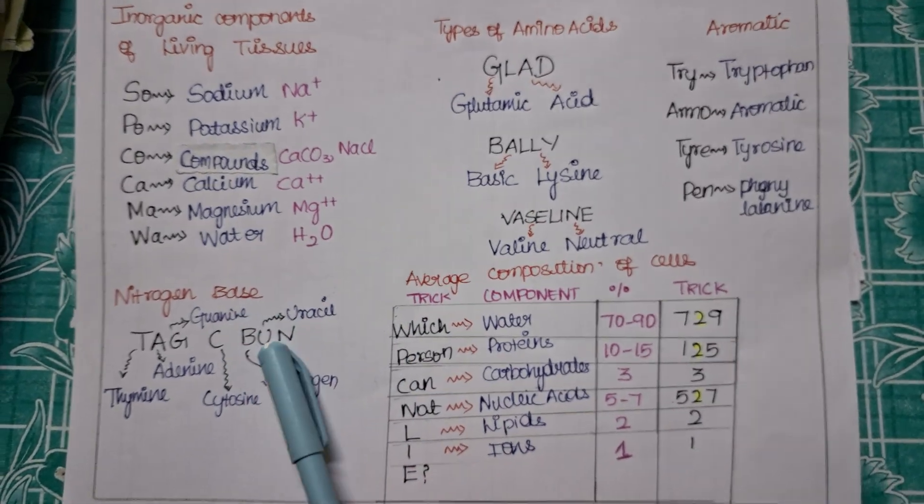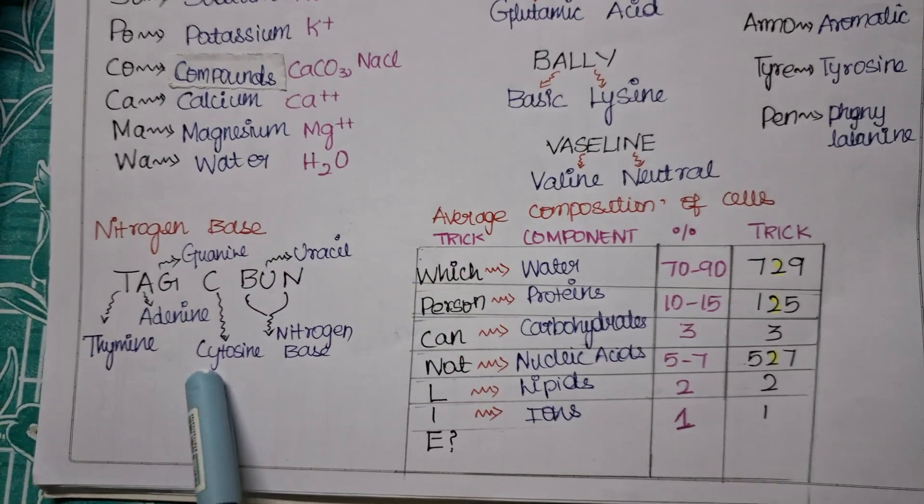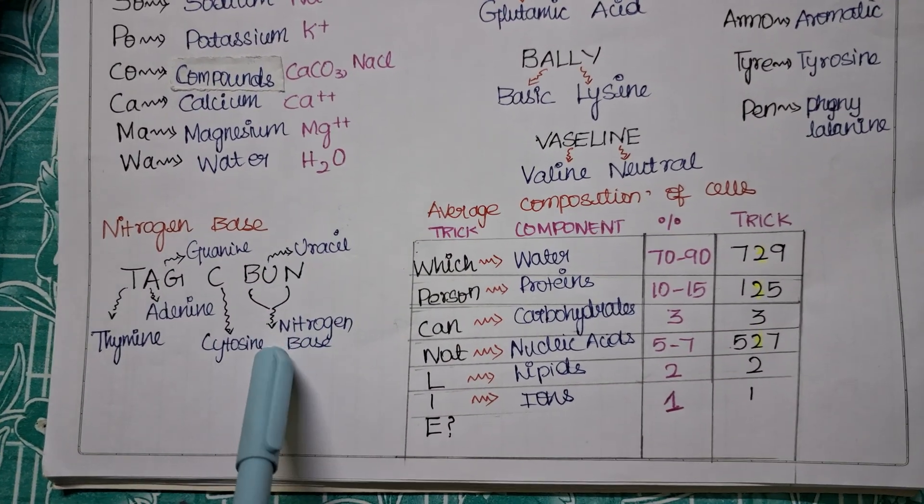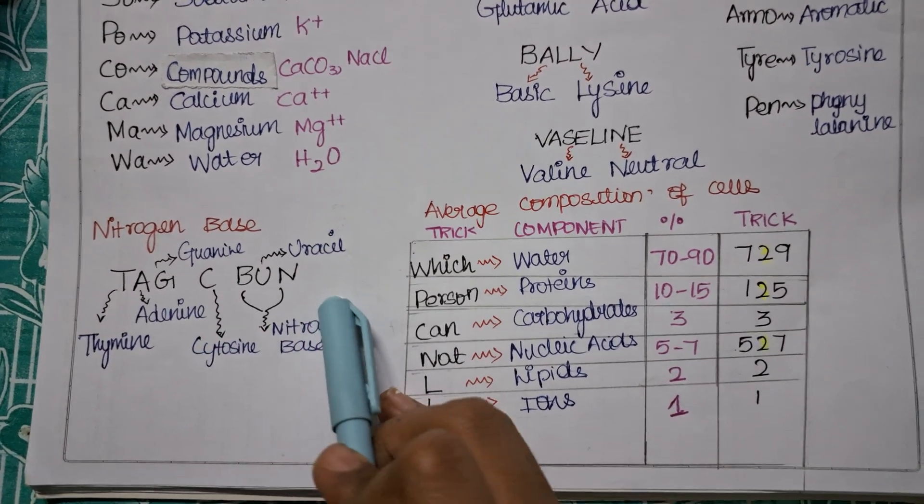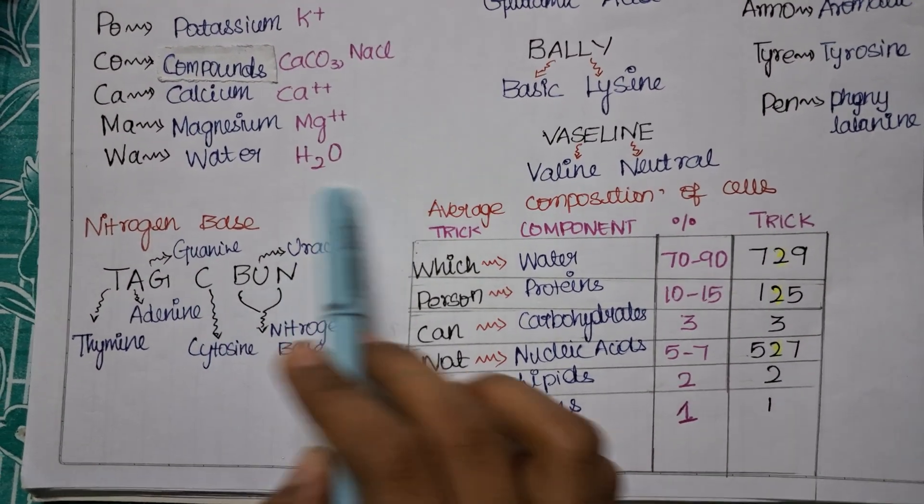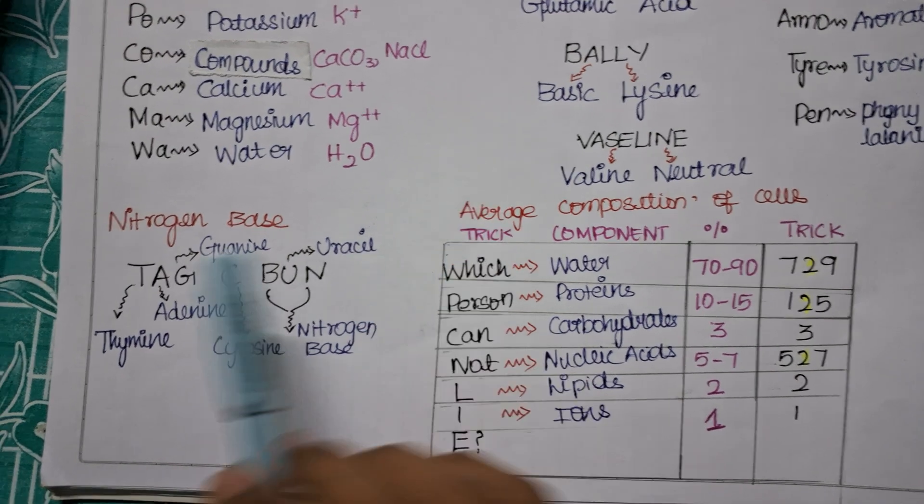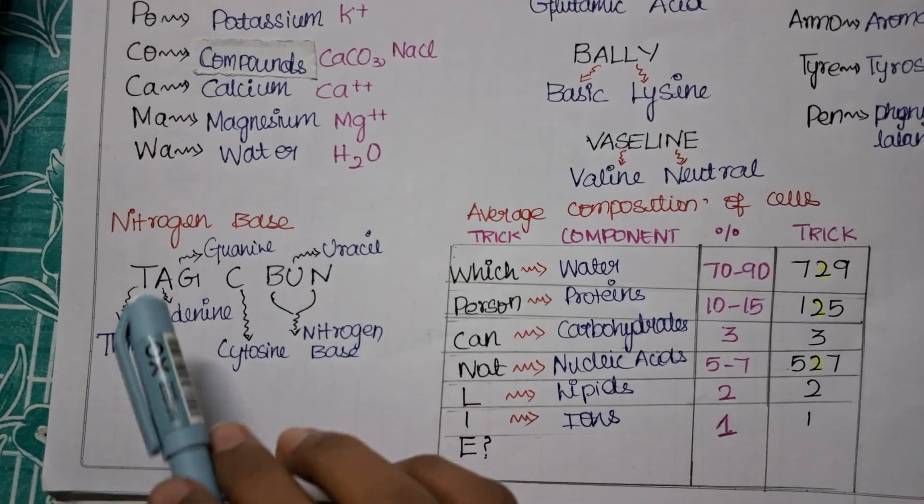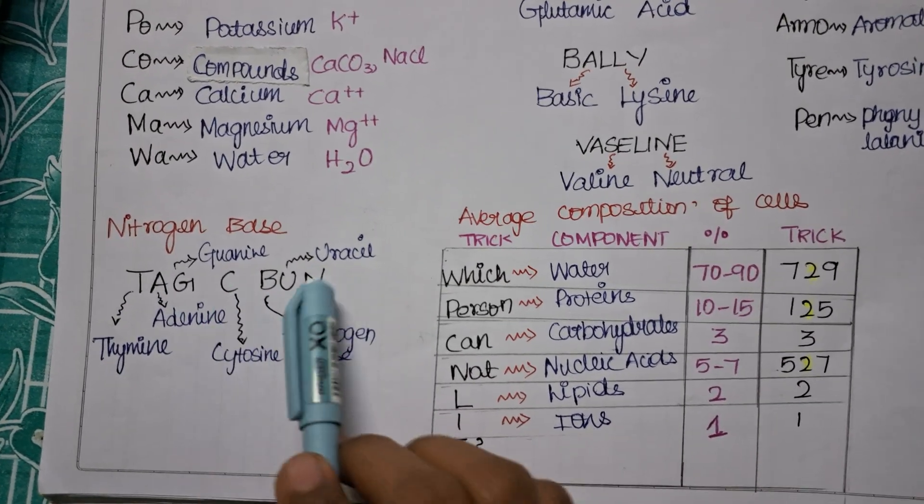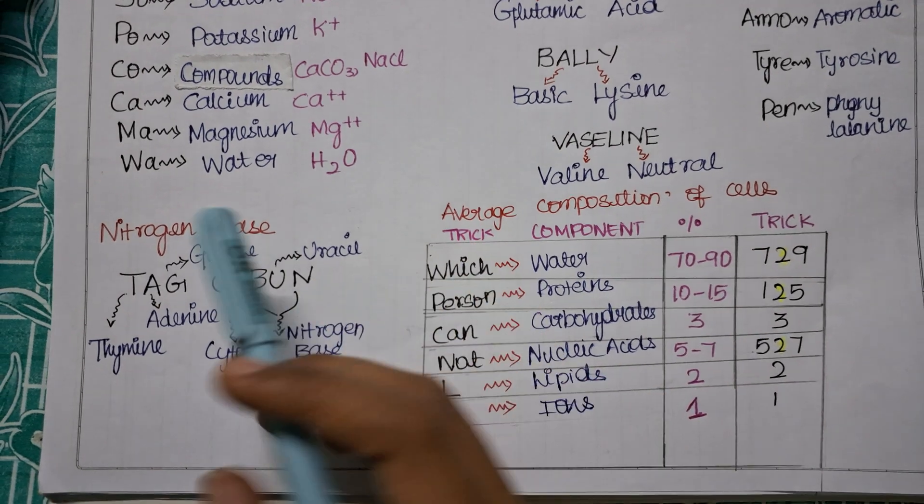Now we will move on to the nitrogen base. So for your nitrogen base there should be four components, right, for RNA and DNA. The difference will be seen in your uracil. So trick to memorize those will be TAG C BUN. C BUN is a person who is very famous, so you are tagging him in your post.